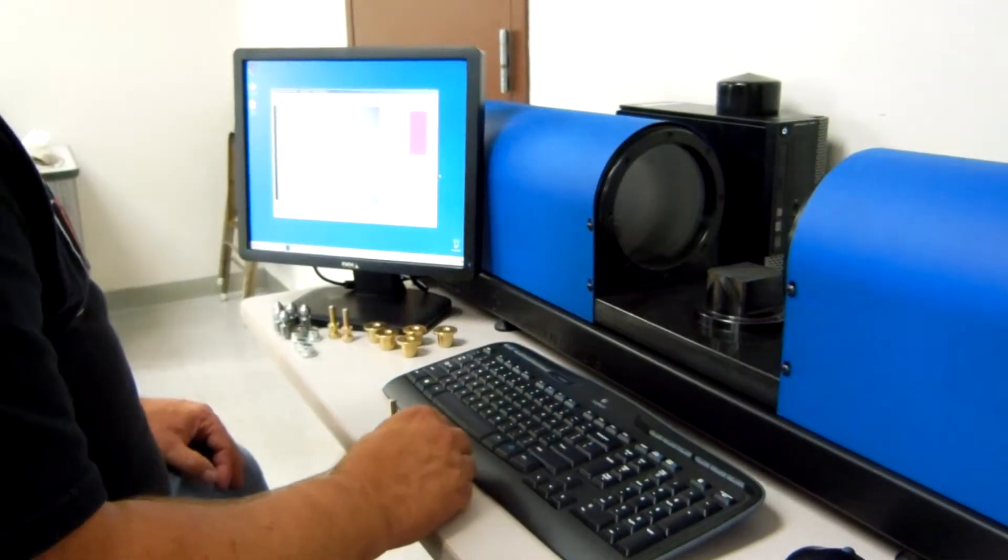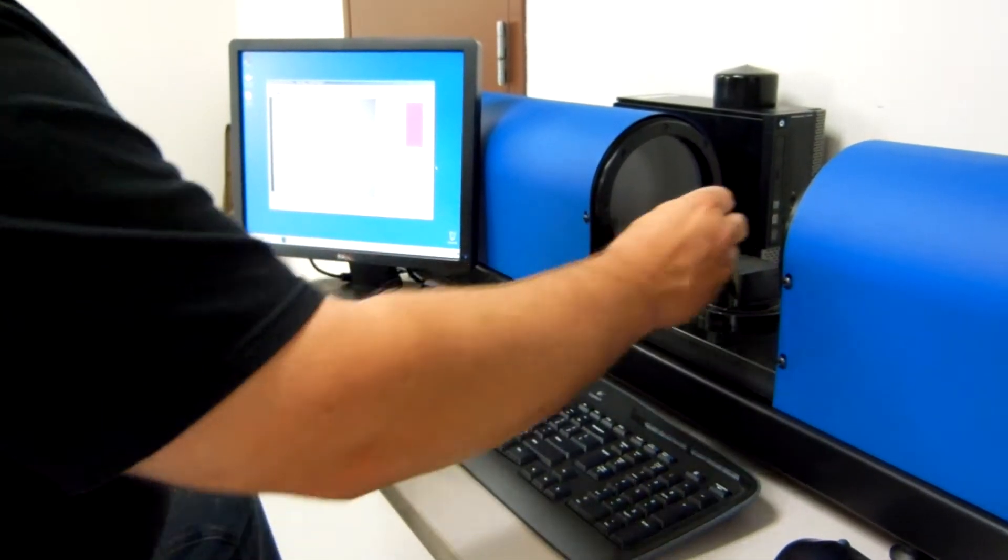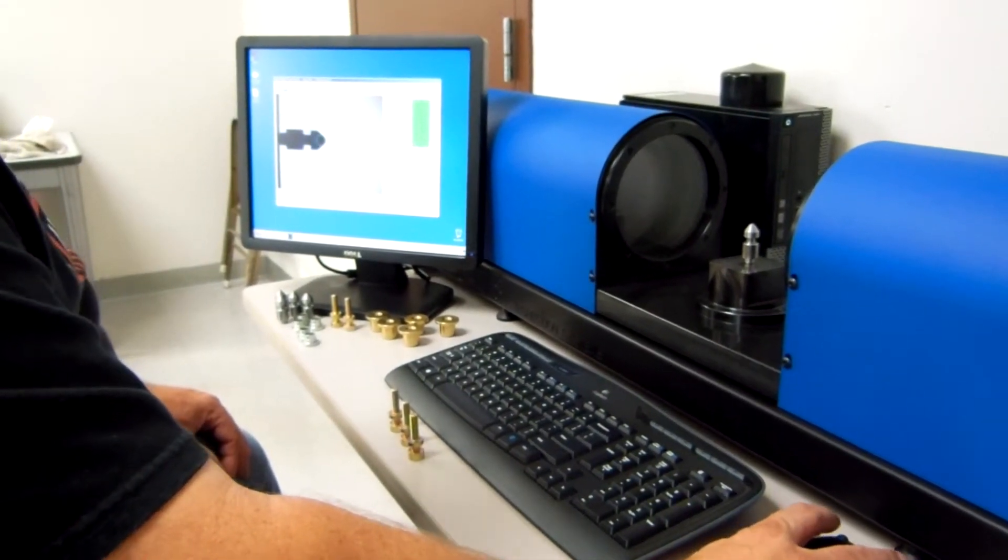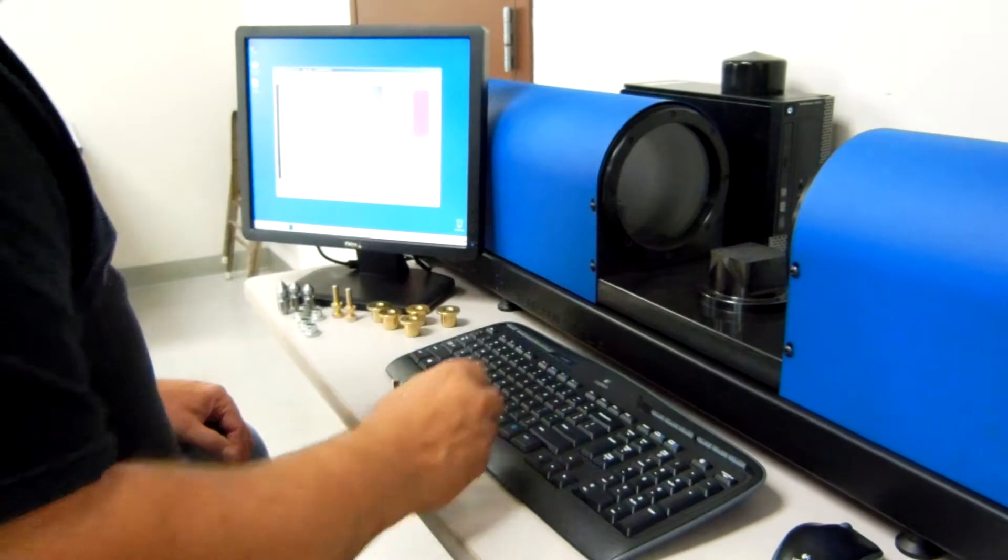It's very simple to switch to another part. Place the new part on the stage, search for it, and you're up and running on that part.